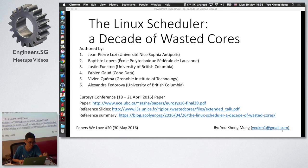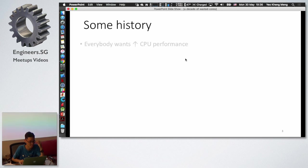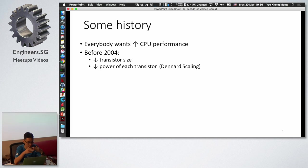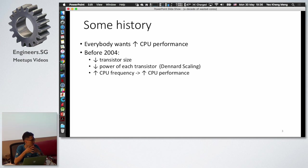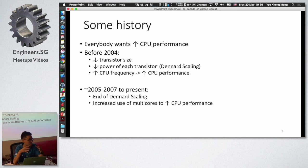Let's begin with some history. Everybody wants a faster CPU. Before 2004, CPU manufacturers would increase performance by reducing transistor size, which lowered power consumption and allowed higher CPU frequency — a phenomenon called Dennard scaling. However, from 2005 to 2007, Dennard scaling broke down because there's a limit to how much you can reduce transistor size.